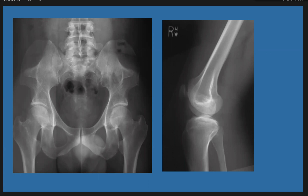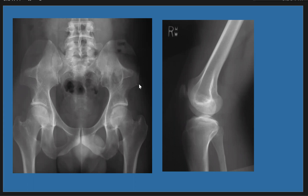Let us start with the pelvic X-ray, the AP view of the pelvis. As we see here in the pelvis, we have iliac horns bilaterally. These are posterior iliac horns seen in the pelvic X-ray. And also in the right knee joint, we see the patella is smaller in size. And also in the pelvis, we see flared iliac crest with a protuberance of the anterior iliac spines.